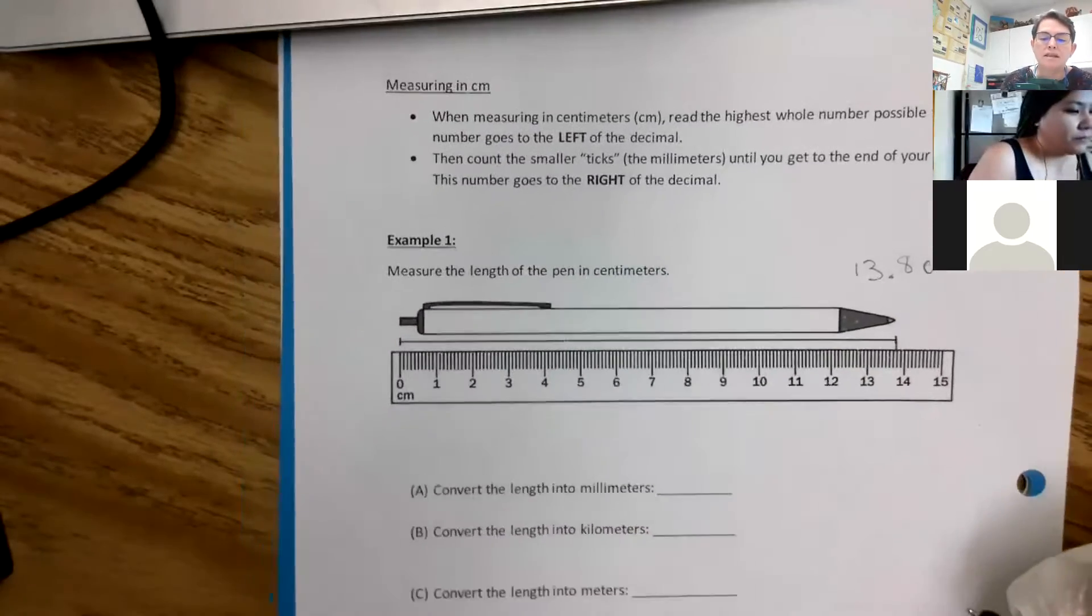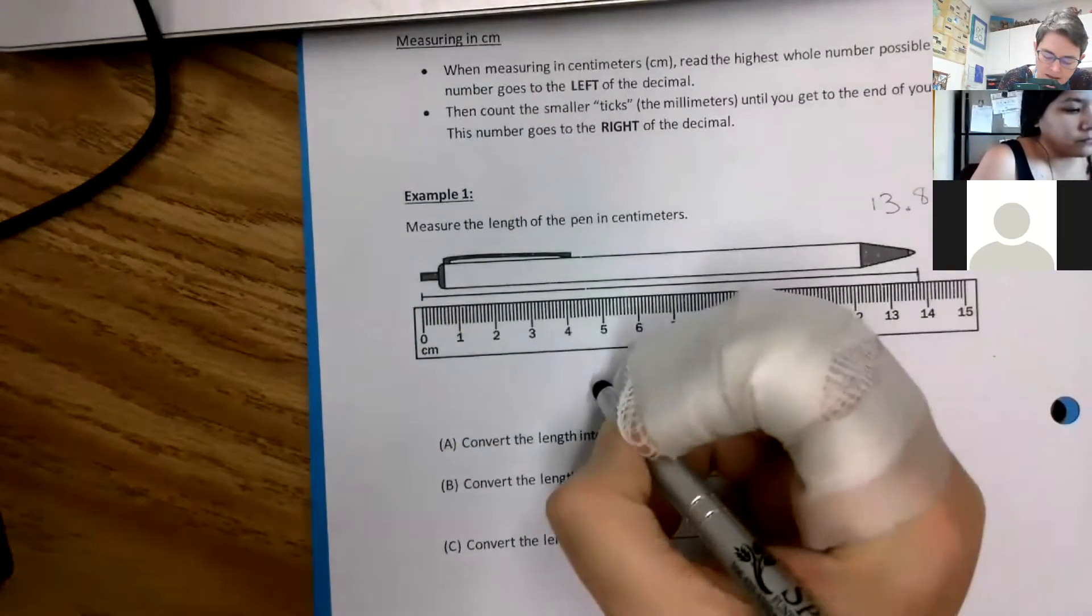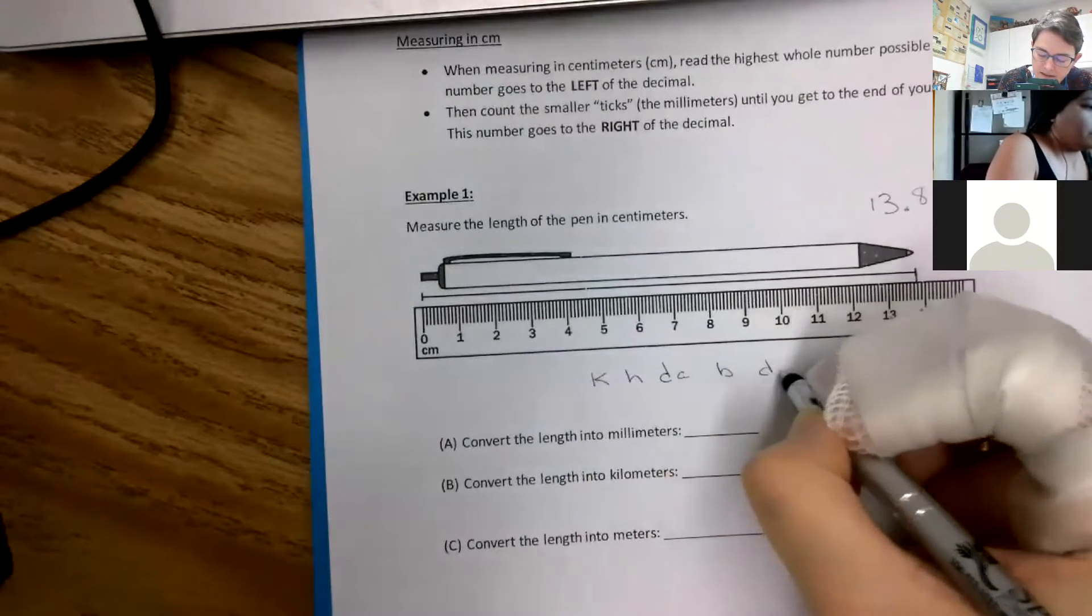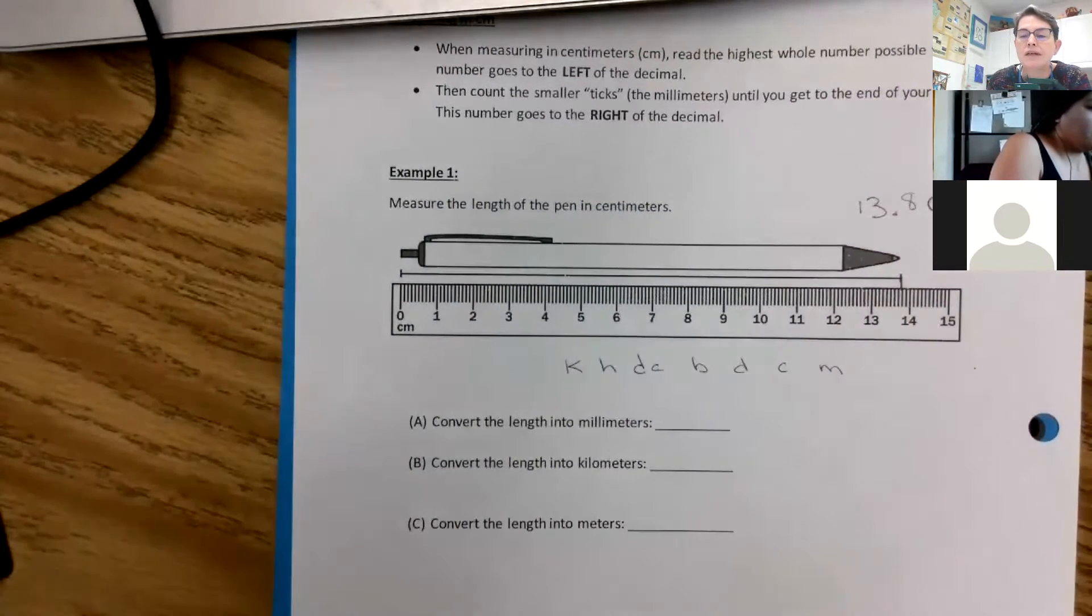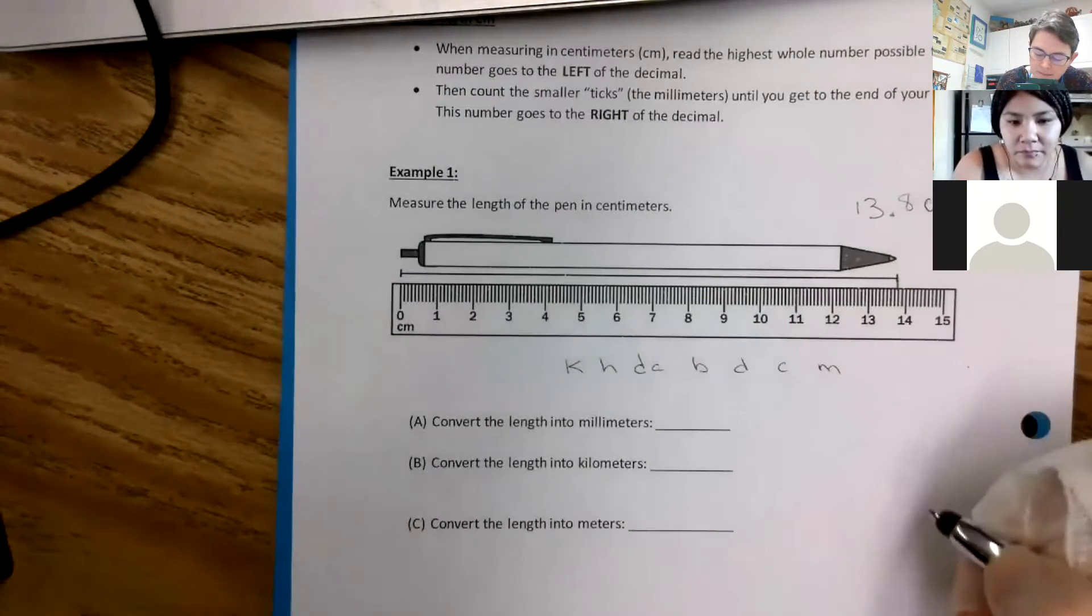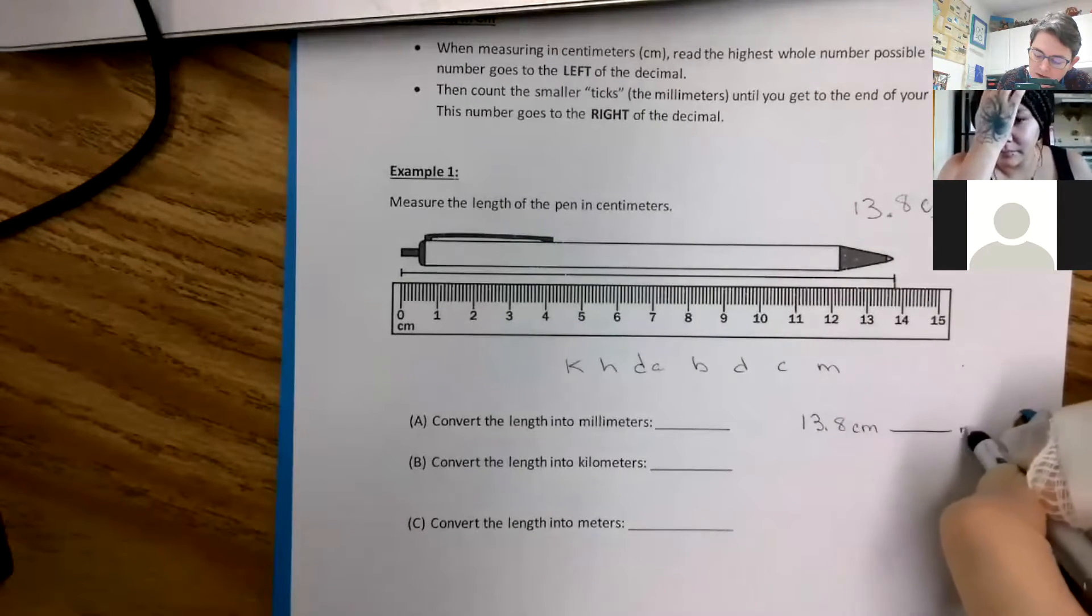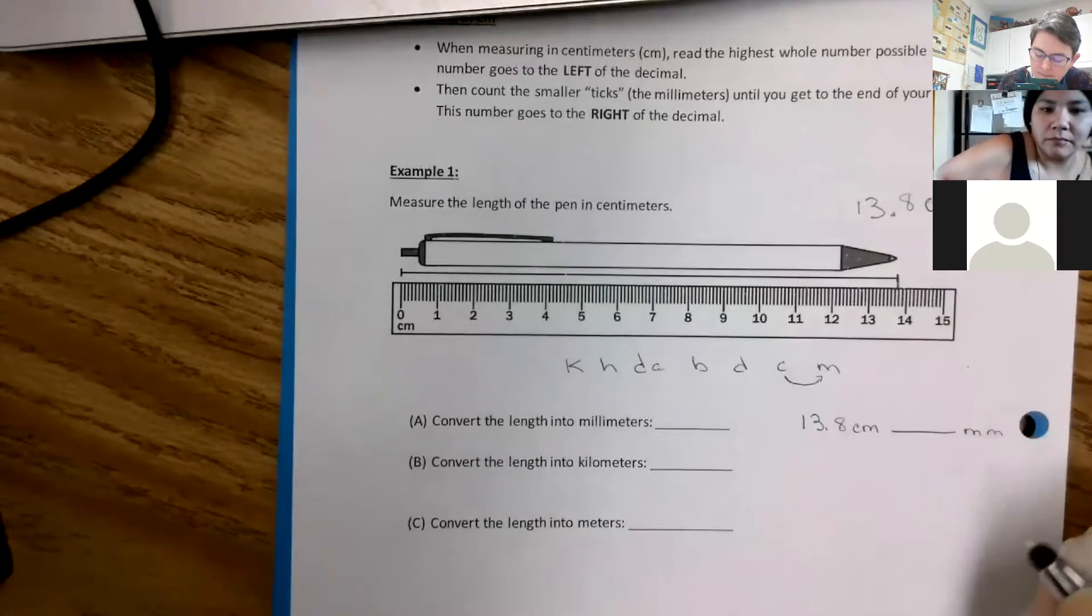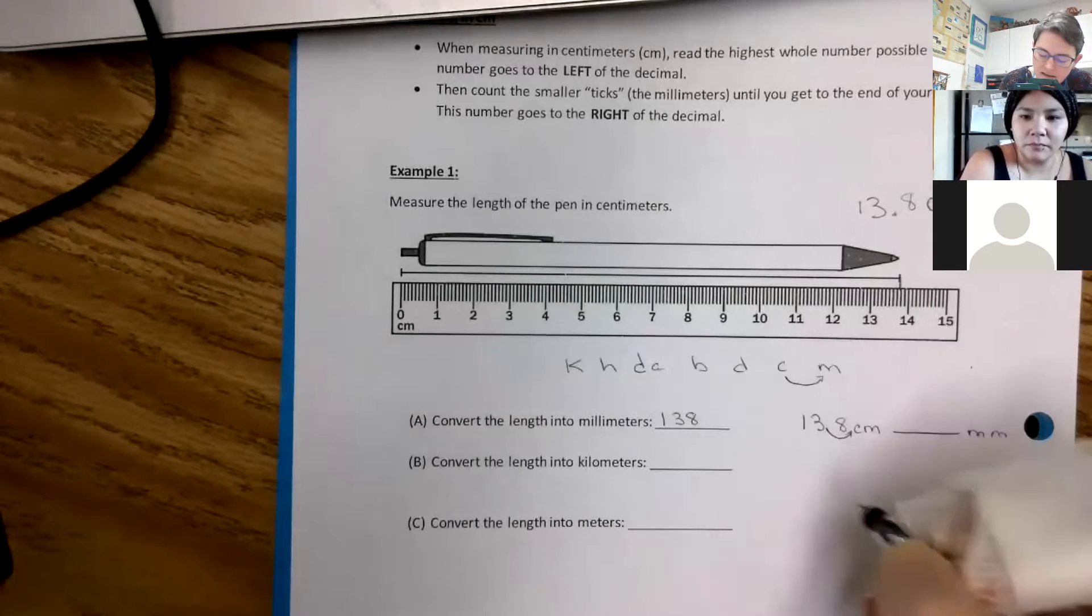To convert to millimeters and kilometers, I'm always redrawing that conversion ladder. The more times you redraw it, the more likely you are to remember it. And we're at centimeters. So we're going 13.8 centimeters and we're converting that to millimeters. From centimeters to millimeters is one step. So my decimal place is going to go like that. And it should be 138 millimeters.